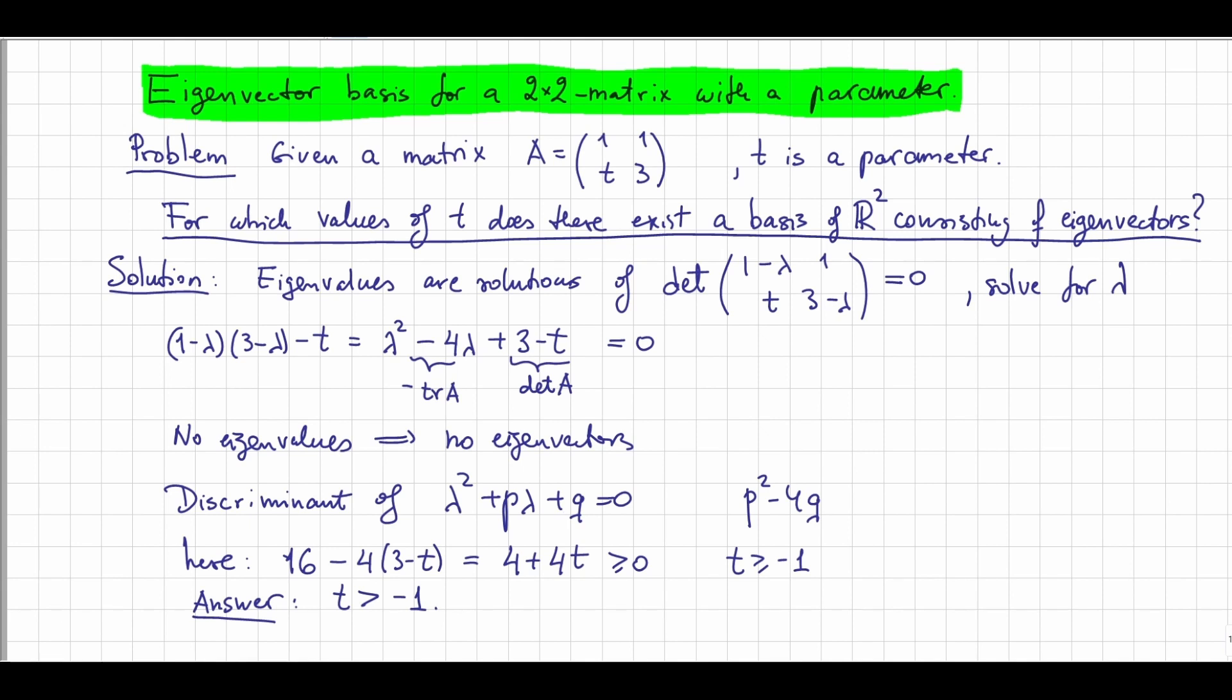Now, if we only have one eigenvalue, the only way we have a basis of eigenvectors with that eigenvalue is that the whole space will have this eigenvalue and the zero vector. So the matrix has to be a diagonal matrix, which it is not. So the only option we have is that t is larger than -1, because in that case, this quadratic equation will have two solutions, and for each solution we'll have at least one eigenvector. So we have two eigenvectors, which are clearly linearly independent. They can't be on the same line because they have different eigenvalues. Therefore, they will form a basis for R². So the answer is t is larger than -1.